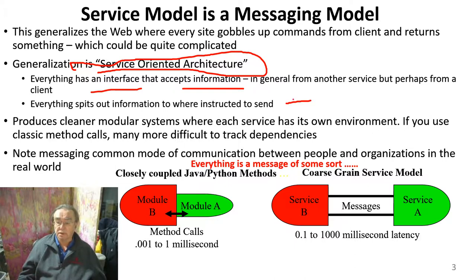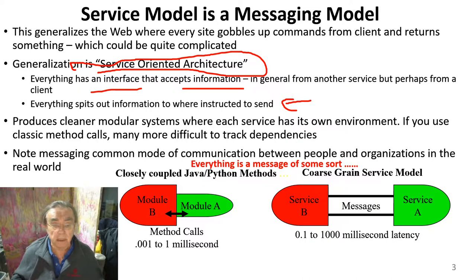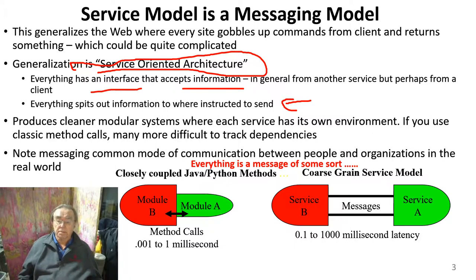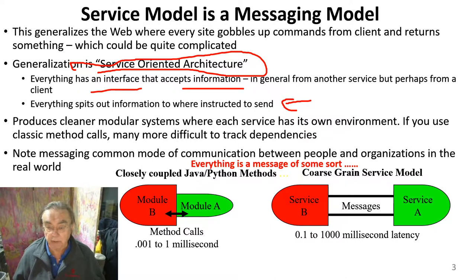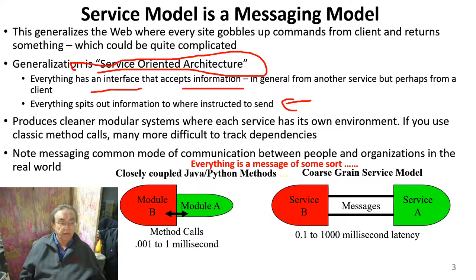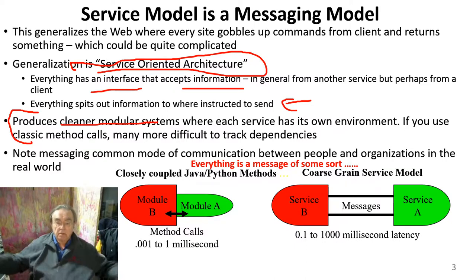There was a huge effort to define the format of these messages in something called web services. We will actually use REST, which is simpler than web services and effectively took over from them. Web services were meant to be incredibly important and much better than the previous approach, CORBA. Unfortunately, CORBA died and web services essentially died too — they were too complicated and couldn't keep up with rapid change. Regardless, whether you use REST or web services, messaging always produces cleaner, more modular systems because there is a clear separation linked by the message.